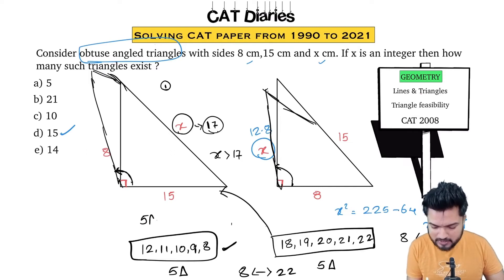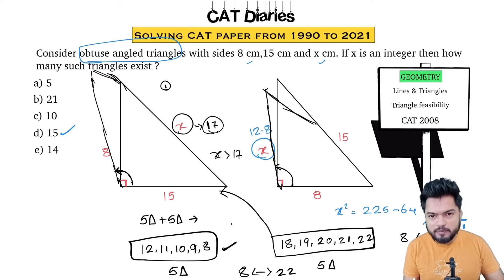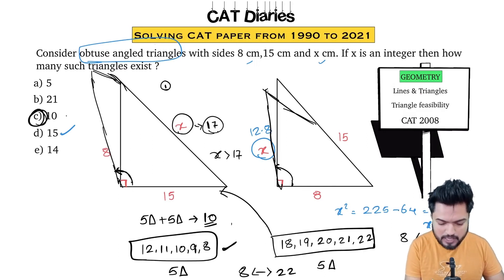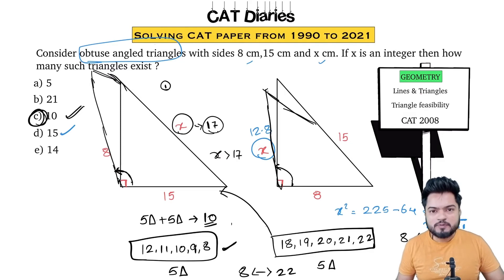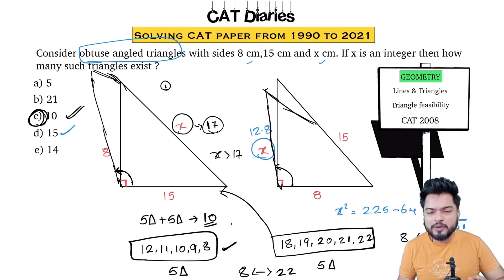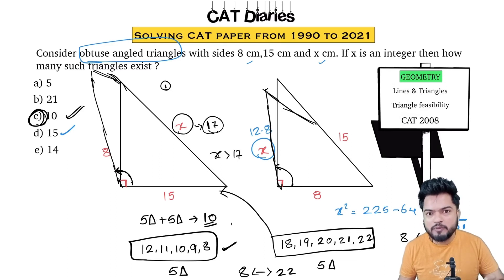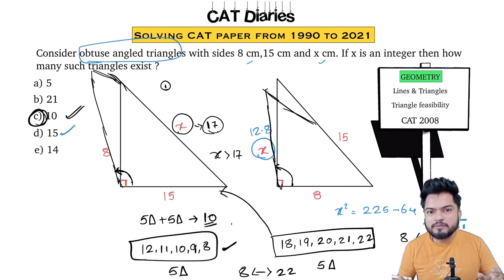So 5 triangles in Case 1 and 5 triangles in Case 2 — the total number of obtuse angle triangles out of the 15 is 10. Given that X is an integer, the answer is option C, which is 10. I would rate this problem as difficult compared to the previous one. The previous one was just applying the property; this one requires deeper thinking — you must identify the right angle condition first in both cases, then derive which values of X produce obtuse triangles.